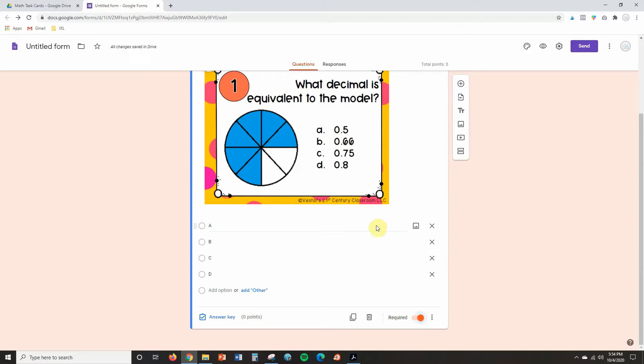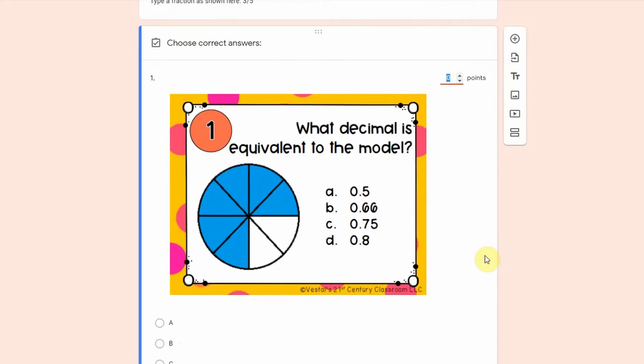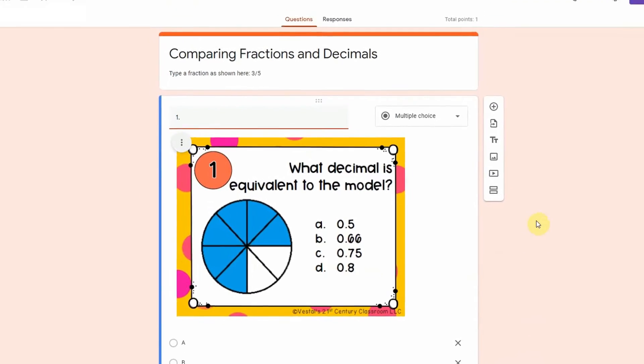We're gonna say that this is required so students have to answer this question to submit the form. And then the next thing we want to do is add in the answer. So we're gonna click on answer key and you're going to decide how many points do you want this to be worth. I usually just make all the task cards one point each and then you are going to check the correct answer.